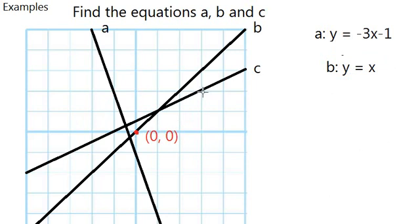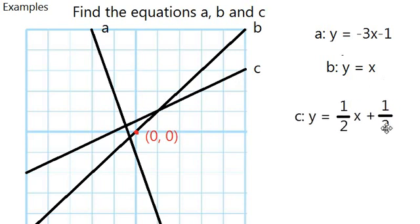And finally, for equation C. We know that it goes down 1 and goes right 2, so the gradient is a half. The y-intercept is also a half, so the equation for that line is y equals half x plus a half.